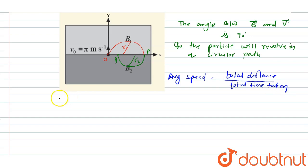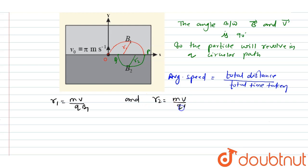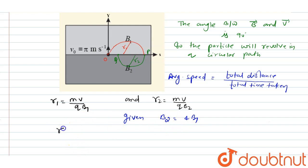First, we calculate r1 and r2. In a magnetic field, r1 = mv/(qB1) and r2 = mv/(qB2). Since B2 = 4B1, substituting B1 = B2/4 gives r1 = 4r2. This is relation 1.